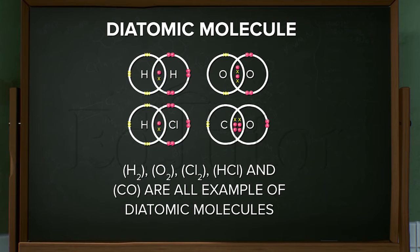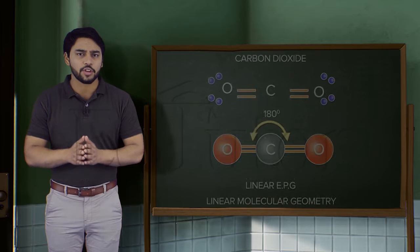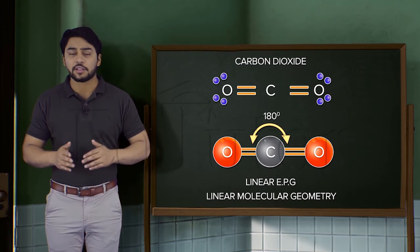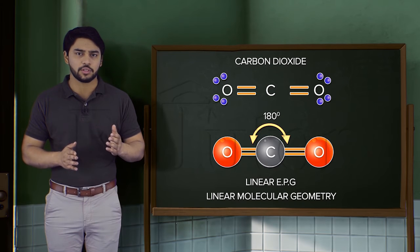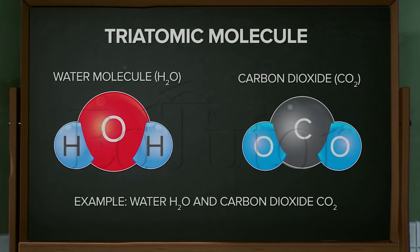Hydrogen H2, oxygen O2, chlorine Cl2, hydrogen chloride HCl, and carbon monoxide CO are all examples of diatomic molecules. Moving on, if a molecule contains three atoms, it's classified as a triatomic molecule.